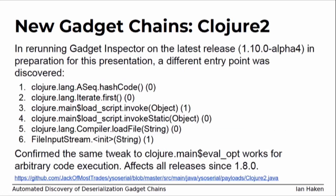Just a couple of weeks ago, before this talk, I re-ran Gadget Inspector on the latest release of Clojure. It turns out that exact same gadget chain I found before still exists in Clojure, just with a different entry point — another class implementing hashCode that delegates to a function. You can do exactly the same gadget chain using this different entry point, and that's been in every release since 1.8.0. So there's still an RCE gadget chain in every release of Clojure. I need to follow up with the Clojure guys and see if they want to lock this down too.